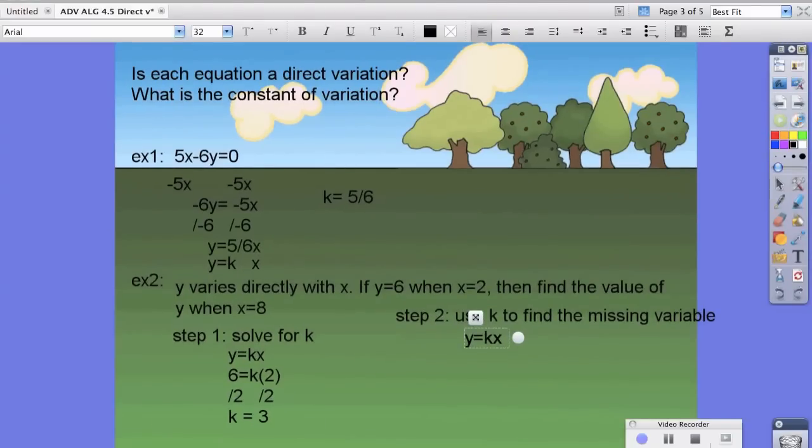For step two, we're now going to use k to find the missing variable. And for the second part of the equation, or second part of the sentence, it says, find y, so we don't know what y is equal to, when x is equal to 8. So we do know what k is. k we found from step one is 3, and x turned out to be 8. Therefore, y equals 24.